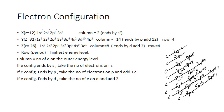For atom Y with atomic number 32, we write: 1s2, 2s2, 2p6, 3s2, 3p6, 4s2, 3d10 — that accounts for 30 electrons. We still have 2 electrons remaining. Since sublevel p can hold up to 6 electrons, we place the remaining 2 electrons on 4p, giving 4p2.